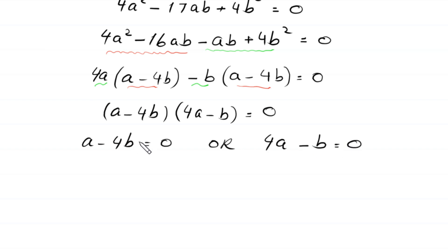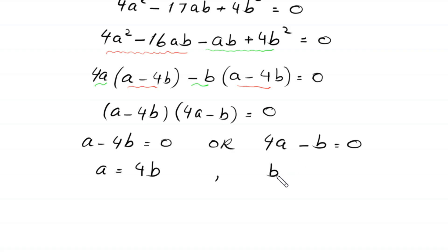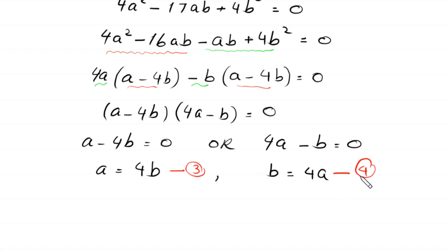From a - 4b = 0 we get a = 4b (equation 3). From 4a - b = 0 we get b = 4a (equation 4). We now substitute each back into equation 1.